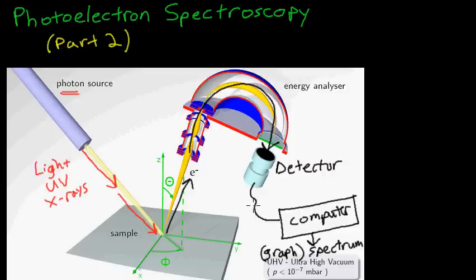Okay, it's time for photoelectron spectroscopy, part two. We already looked at the experimental setup where photons strike a sample of atoms and eject electrons. Those electrons are analyzed, and then a computer generates a graph or a spectrum for us, and that spectrum, that graph, is going to be the subject of today's video.